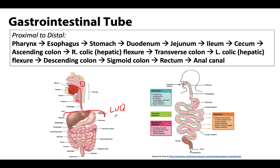The stomach transitions into the duodenum at the pylorus or the pyloroduodenal junction, so right around this region you're going to have the transition into the duodenum. The duodenum is the first, most proximal, and shortest part of the small intestine. It will transition into the jejunum at the duodenum-jejunal junction — you can usually see a sharp turn inferiorly. The jejunum is also located mostly in the left upper quadrant, though due to its size it extends into other quadrants as well.